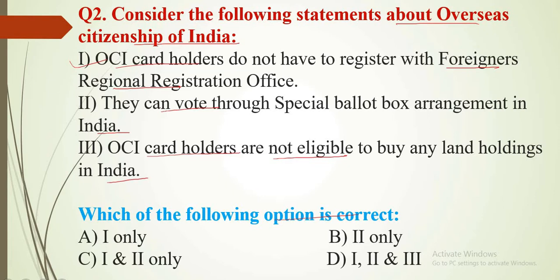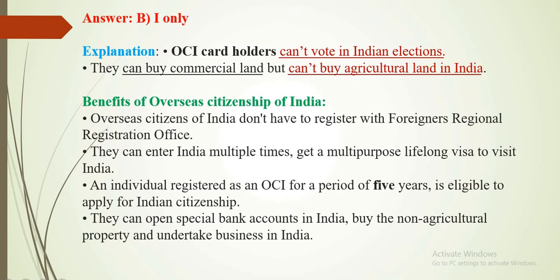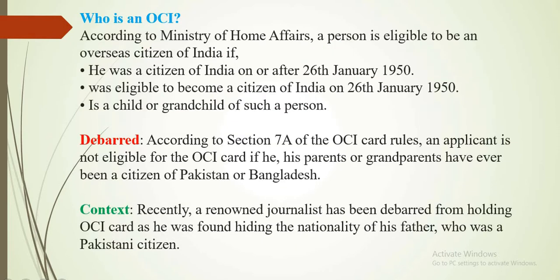Only statement 1 is correct; 2nd and 3rd are incorrect. So the answer is A — 1 only. OCI card holders cannot vote in Indian elections. They can buy commercial land but cannot buy agricultural land. The context here is that a renowned journalist recently had their OCI card revoked as they were found hiding the nationality of their father, who was a Pakistani citizen, which is grounds for revocation under OCI rules.